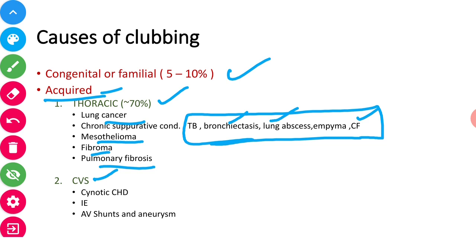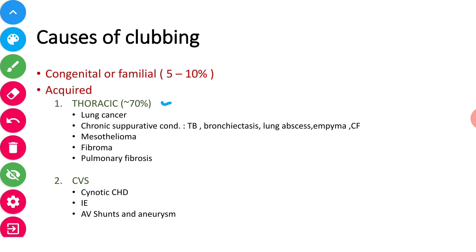Then cardiovascular system: cyanotic congenital heart disease, infective endocarditis, and AV shunts. So these are causes for thoracic and CVS.